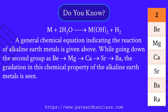While going down the second group — from beryllium to magnesium to calcium to strontium to barium — a gradation in the chemical property of alkaline earth metals is seen. As we move down in this group from beryllium to barium, the reactivity of alkaline earth metals increases.